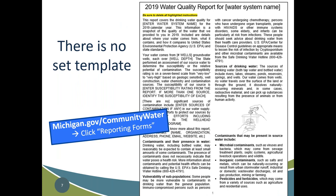There is no set template for the CCR, but we do offer one on the EGLE webpage. If you go to michigan.gov/communitywater and click on reporting forms, you can find the current year's template available for download. It's a very simple find-and-replace type of report where you can type in your water system name, all of your information, and add your results to the water table, and it has all of the required language already included.